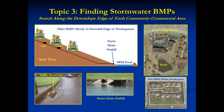Finding stormwater BMPs is actually pretty easy. Most existing BMPs are ponds located at the downslope edge of proposed development projects, and you're most likely to find BMPs in projects built in the 1980s or later. You could begin with aerial photos and look along the downslope area for ponds like that pictured in the upper right. Newer BMPs, like ESD-LID practices, will be found before runoff reaches a storm drain inlet, such as the one situated in the court in the lower right photo.